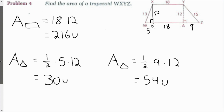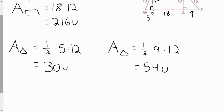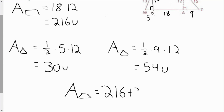The area of the trapezoid equals the area of the rectangle plus the two triangles: 216 plus 30 plus 54, giving a total area of 300 units squared.